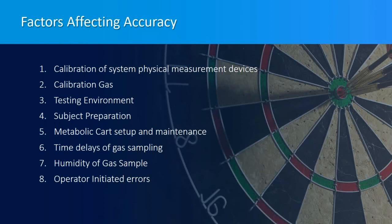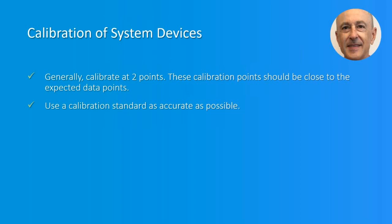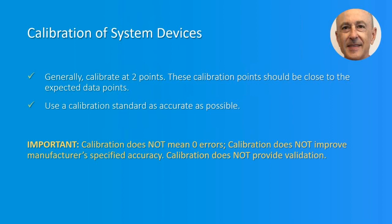Calibration is a comparison to a standard and usually results in an adjustment. Calibration does not mean zero errors — it does not improve the manufacturer's specified accuracy, but best brings the accuracy of equipment up to factory specifications. Generally, you want to calibrate at two or more points close to the minimum and maximum of the expected data range, using a calibration standard as accurate as possible. After calibration, new zero or offset operating points are set, and sometimes span or gain operating points are set.